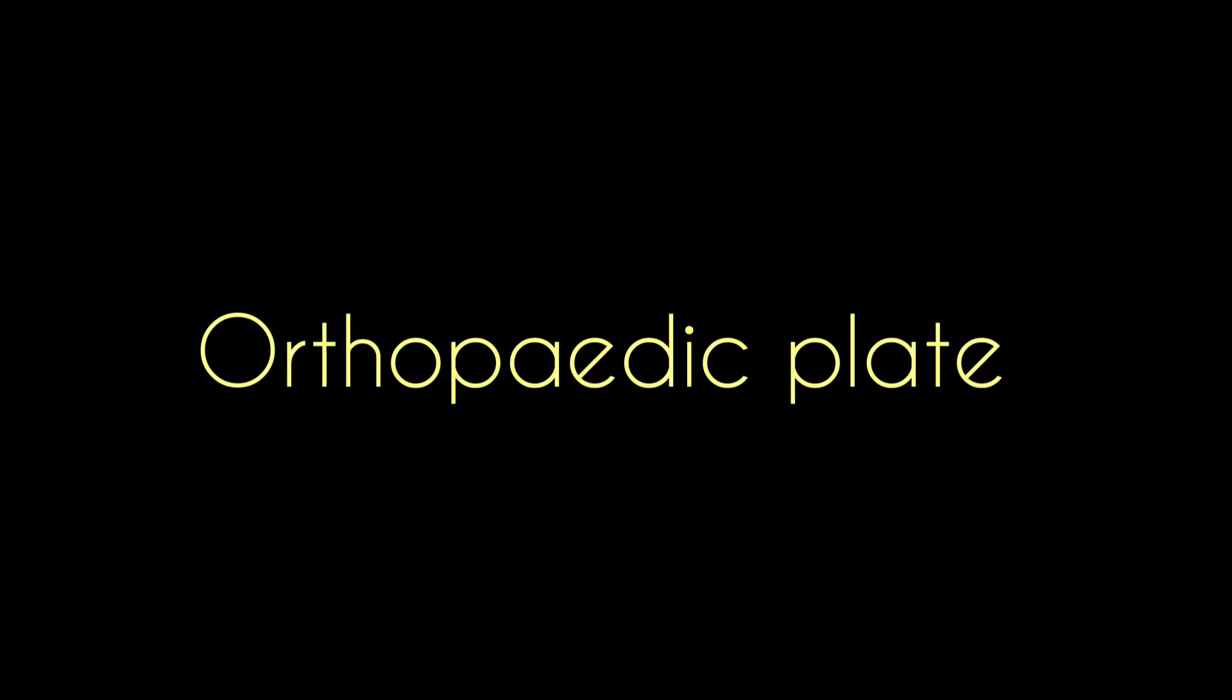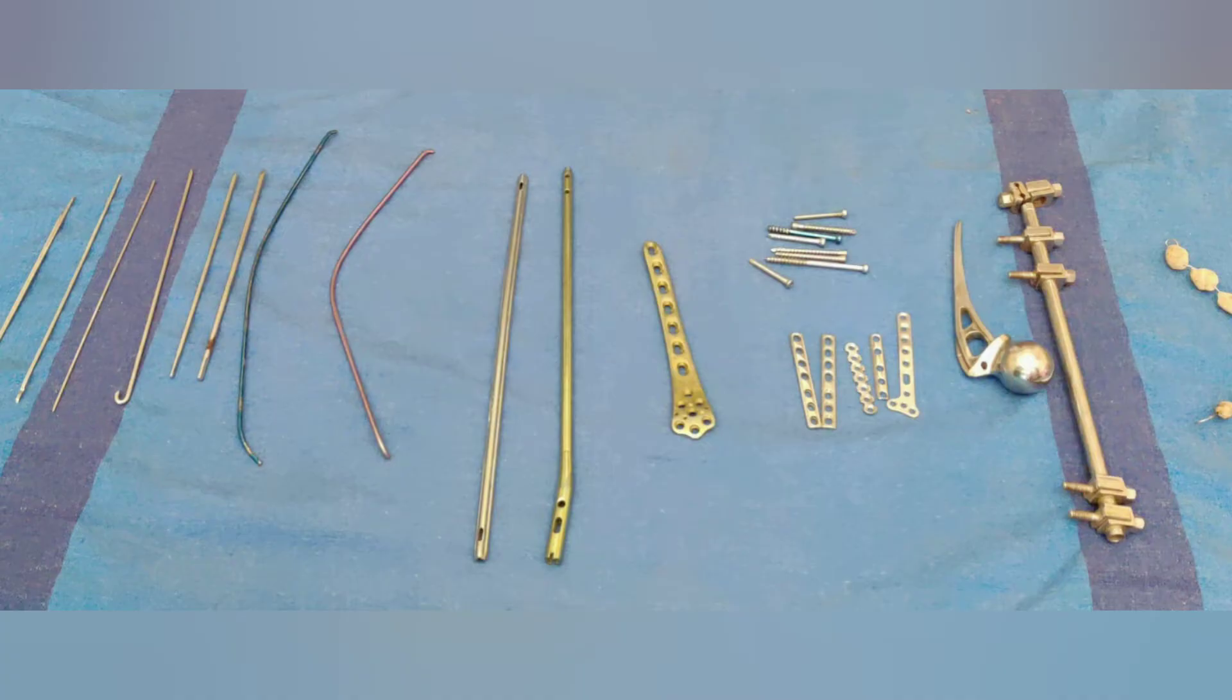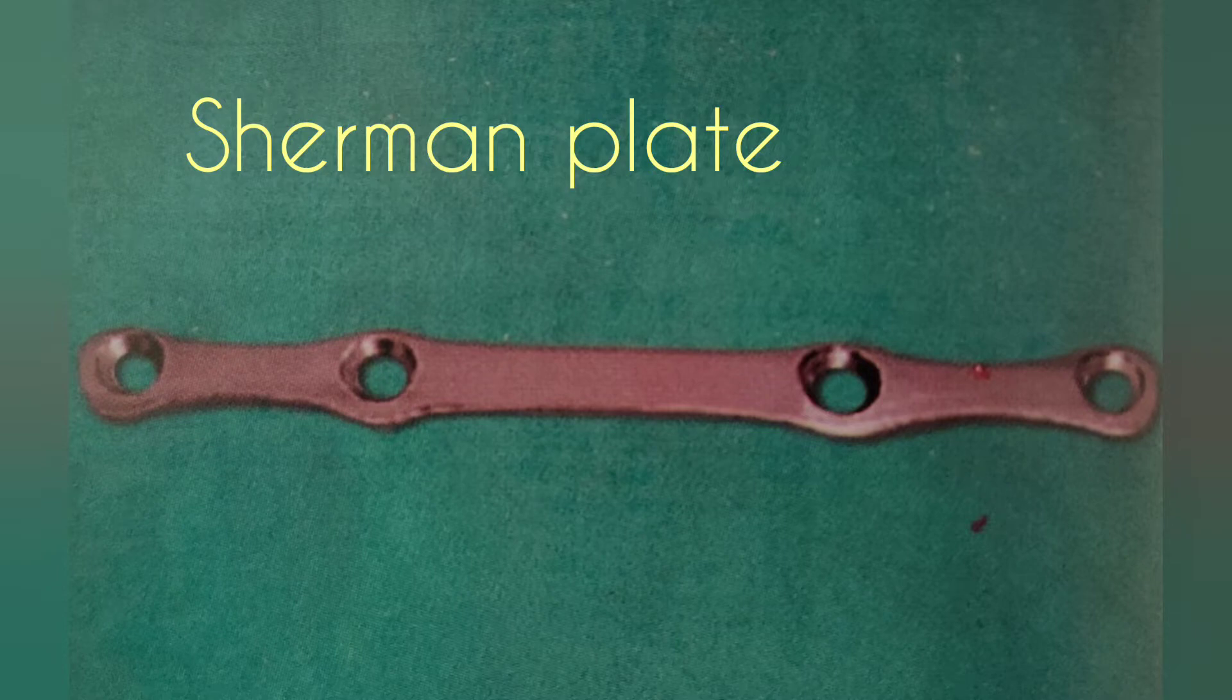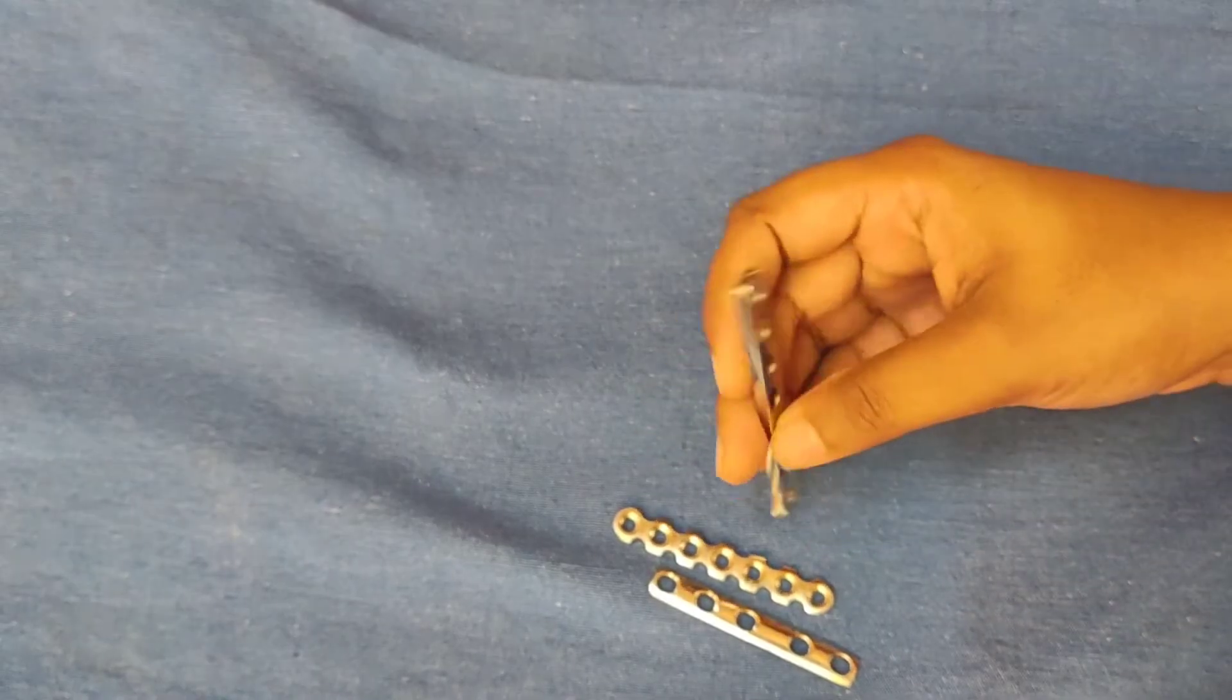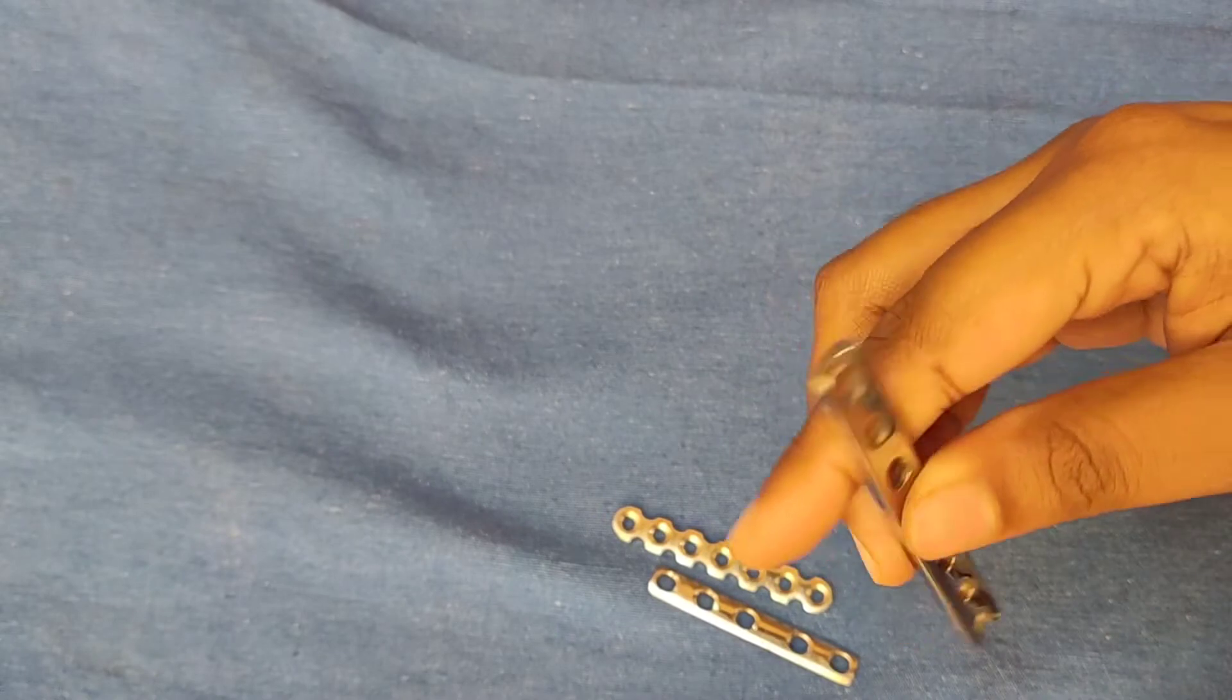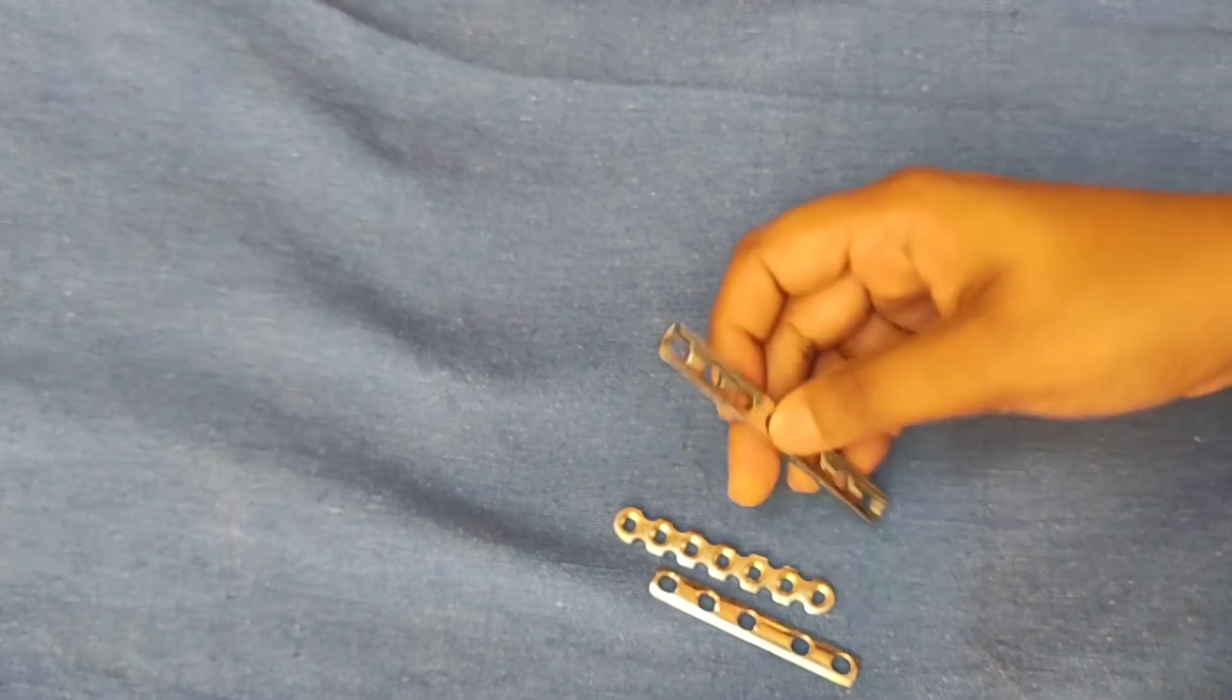Today we will discuss orthopedic plates. A plate is an internal splint which holds the fracture ends of bone. Sherman plate is supposed to be the first scientific plate in the history of orthopedics. The plate maintains the alignment of bone and transfers forces from one end of bone to the other end.